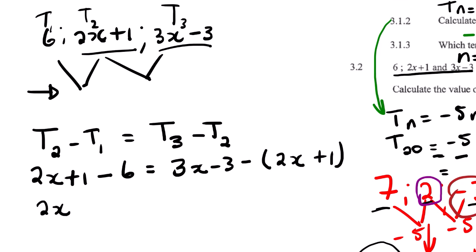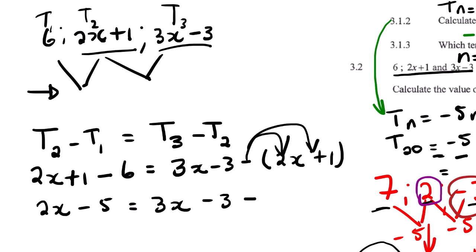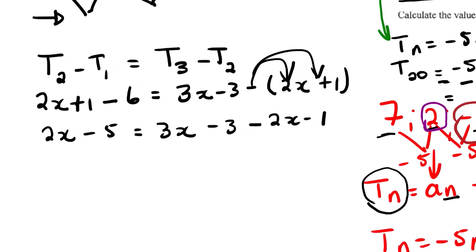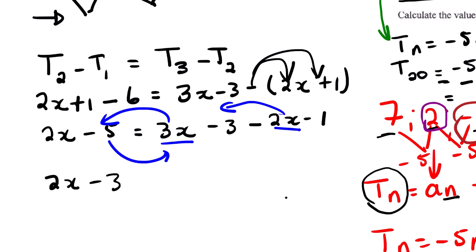Simplifying the left side: 2x plus 1 minus 6 gives 2x minus 5. On the right side, distributing the negative: 3x minus 3 minus 2x minus 1 gives x minus 4. Now taking all x terms to one side: 2x minus x minus 2x equals negative 3 minus 1 plus 5, which simplifies, leaving negative x equals 1... wait, collecting terms: 2x minus 3x plus 2x gives x, and the right side resolves.